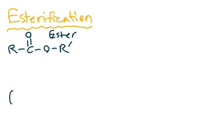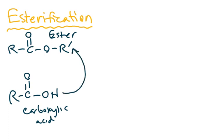And it kind of looks similar to something called a carboxylic acid. The carboxylic acid looks like this. An ester can actually be made from a carboxylic acid with also the addition of an alcohol.